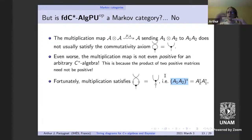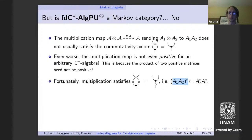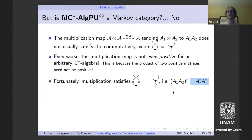The empty bullet denotes the involution on the algebra. This last axiom looks a lot like the commutativity axiom, so you might wonder if it can be used as a suitable replacement. And it turns out you can, but we have to be careful because the involution is not exactly a linear map — it's a conjugate linear (anti-linear) map.